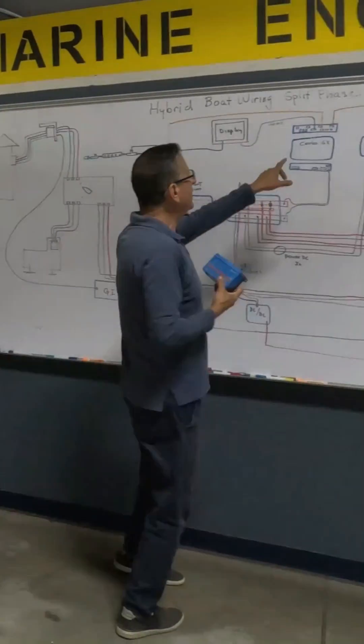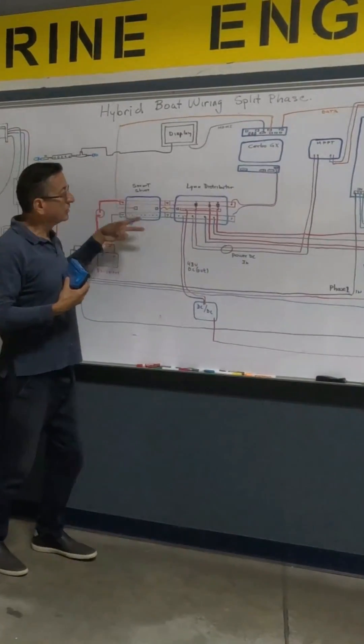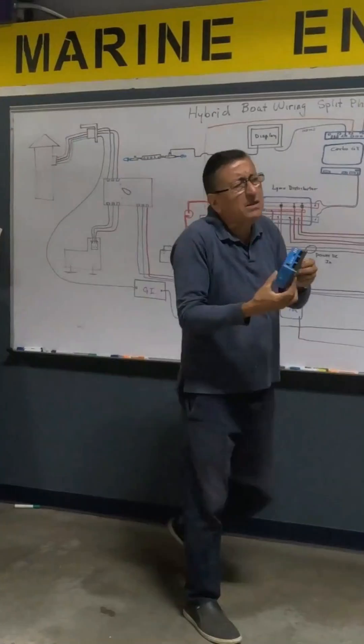This element, the Cerbo GX, integrates the link distributor, the smart shunt, the inverters, the MPPTs, and the display in a simple way.